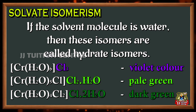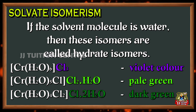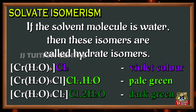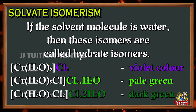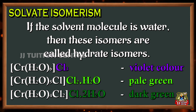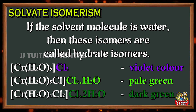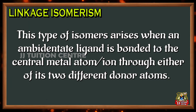For example, consider the complex with a given chemical formula. In the first one, three chlorines are present on the outside. In the second one, two chlorines and one water molecule are present on the outside. In the third one, one chlorine and two water molecules are present on the outside. So the colors are violet, pale green, and dark green respectively.